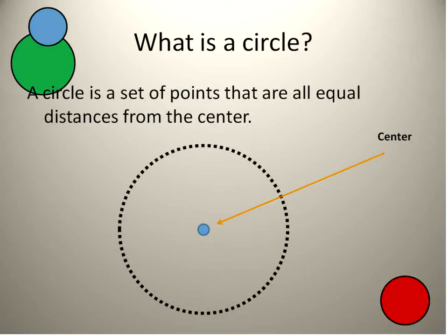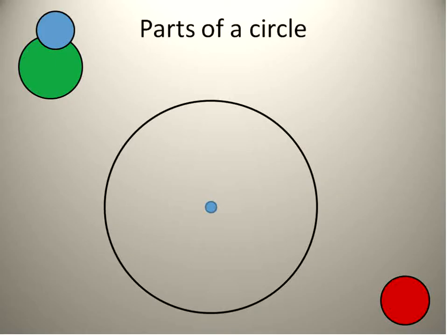So a circle, again, is a set of points that are all an equal distance from the center. When those points are joined together, it looks like this — a solid line. It doesn't look like a dotted line like in the previous slide.